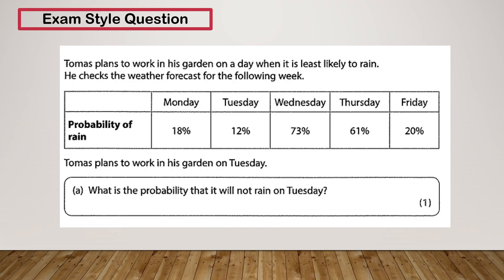So let's have a look at some examples. So Thomas plans to work in his garden on the day when it's least likely to rain. He checks the weather forecast. Thomas plans to work in his garden on Tuesday. What is the probability that it will not rain on Tuesday? Now this is the probability of rain, so we know there's a 12% chance that it will rain.